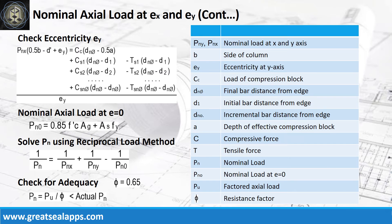Solve the nominal actual load at e equals zero. Get the actual nominal load by using the reciprocal load method. To check for adequacy, the nominal design load should be less than the actual load capacity.